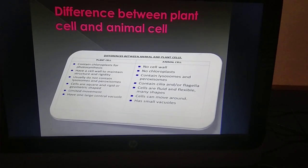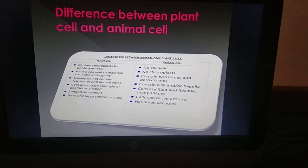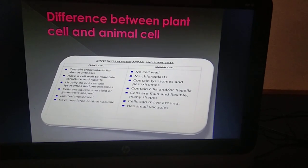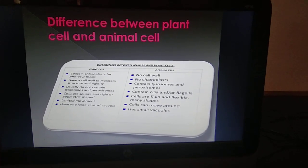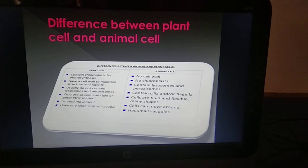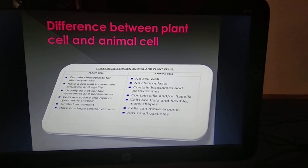Animal cells have a single highly complex Golgi apparatus. Plant cells have many simpler units of prominent Golgi apparatus called dictyosomes. In animal cells, there are centrosomes and centrioles.